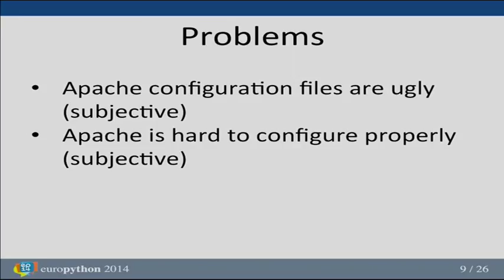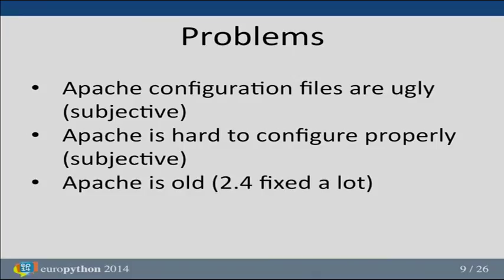Apache is old. The 2.2 version was released in 2005. That branch is still being developed but they mostly fix bugs. The 2.4 version was released in 2012 and it fixed a lot of problems and limitations — for example, memory management became much better and they finally added the ability to declare config file variables, so config files became a bit cleaner too.